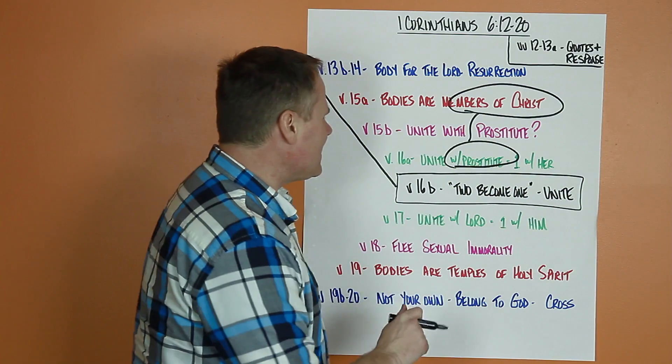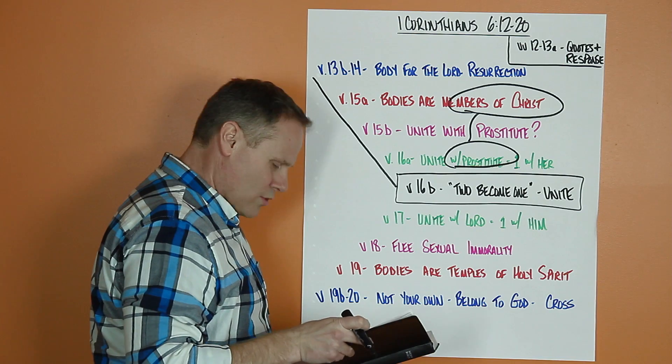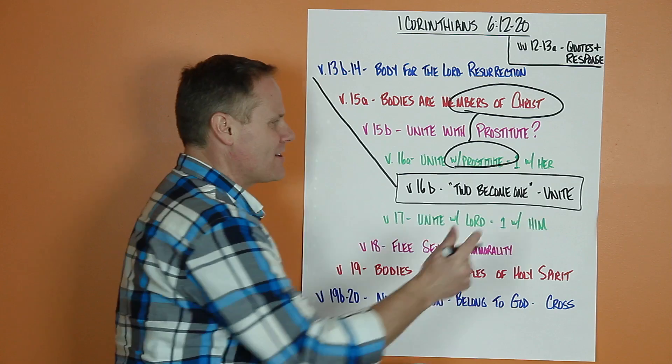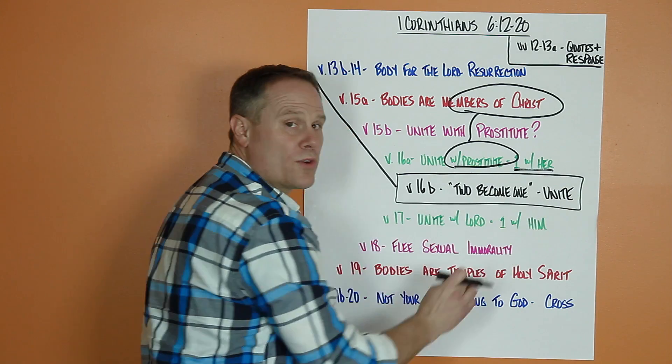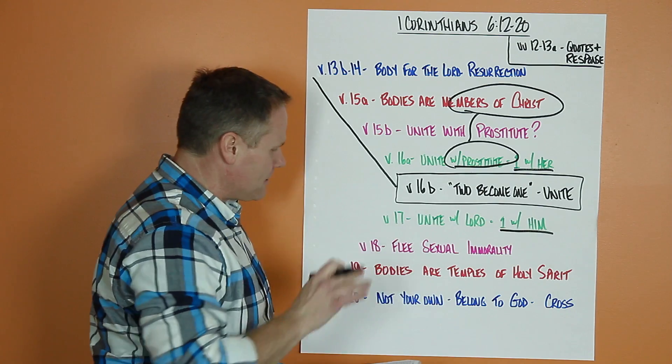In verse 17, now, instead of about uniting with a prostitute, it's about uniting with the Lord. Look at verse 17: But whoever is united with the Lord is one with him in spirit. Here, unite with a prostitute, you're one with her. But if you're in Christ, you've been united with him spiritually.